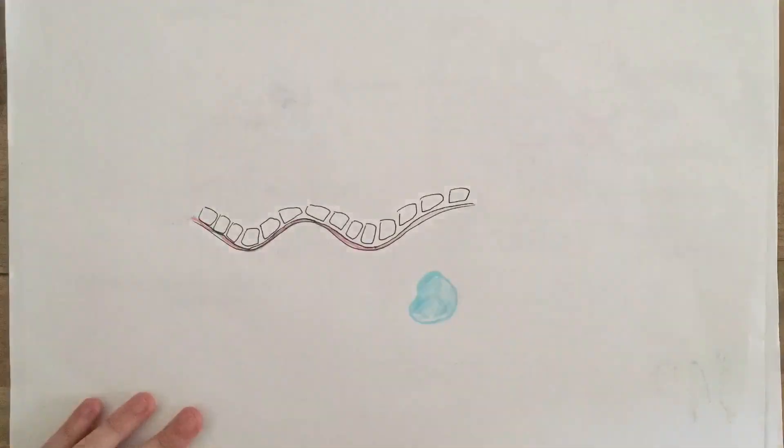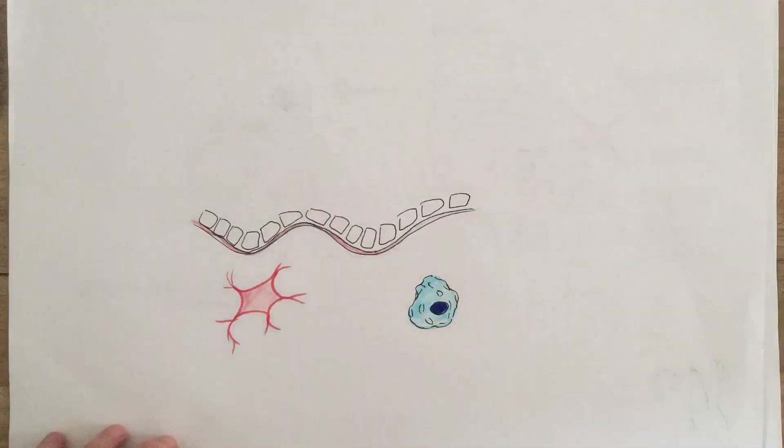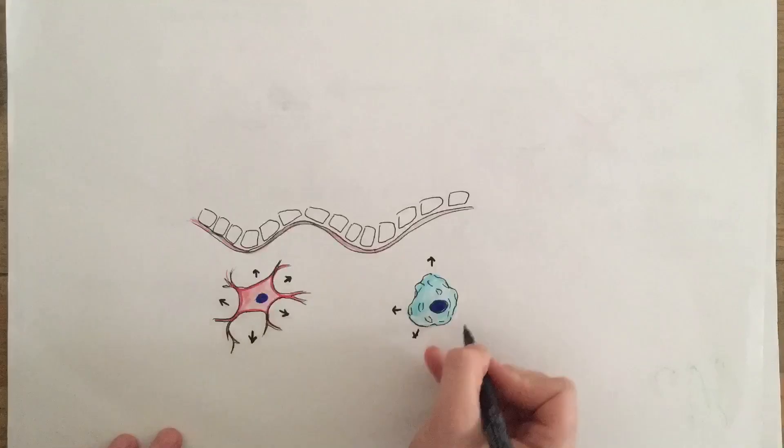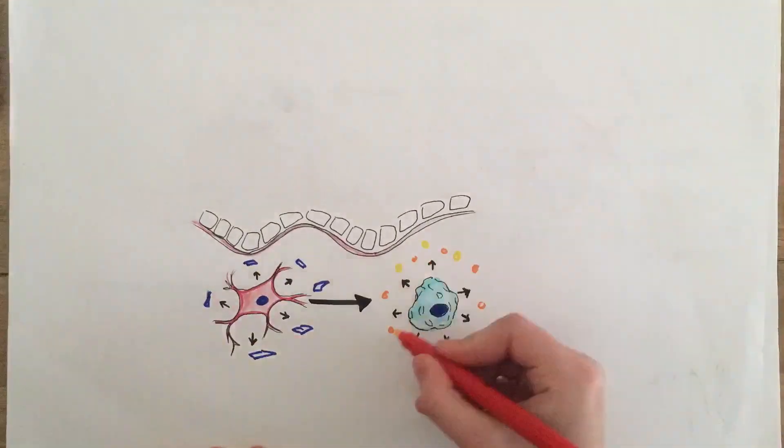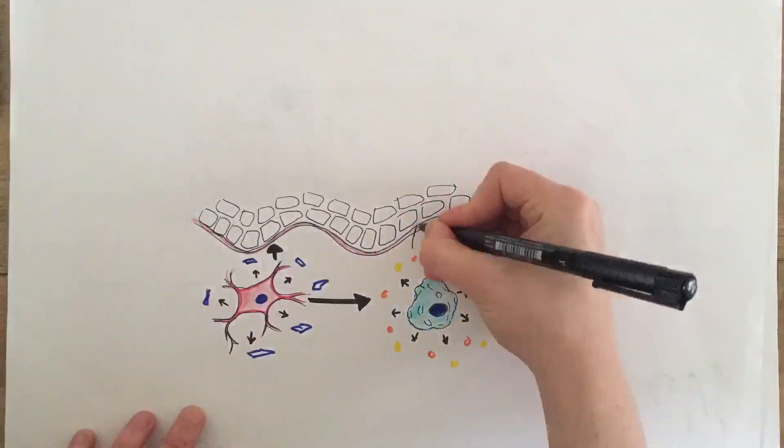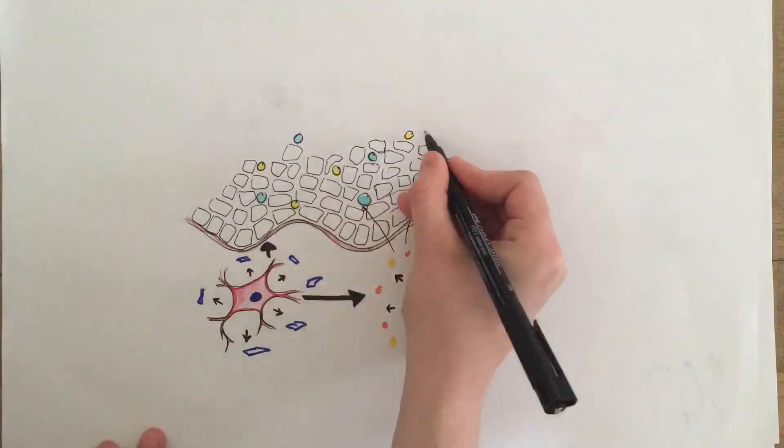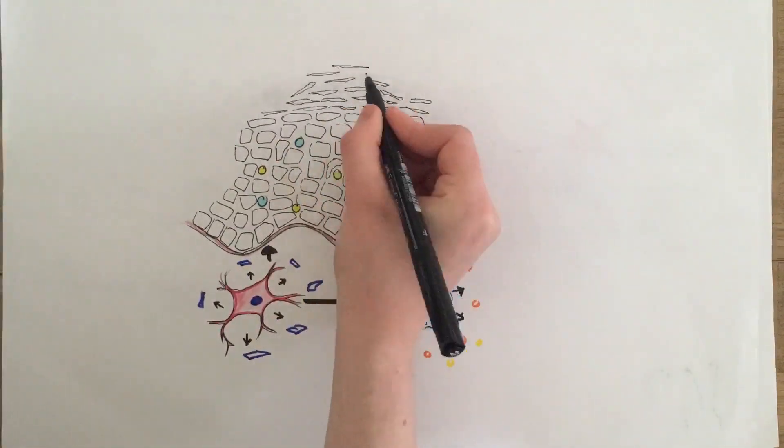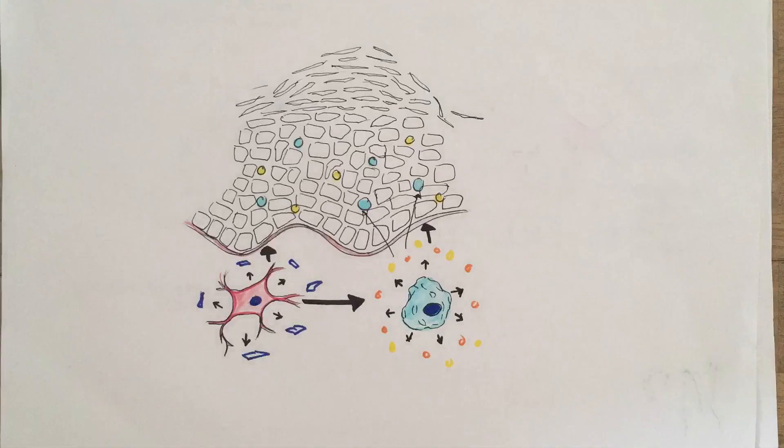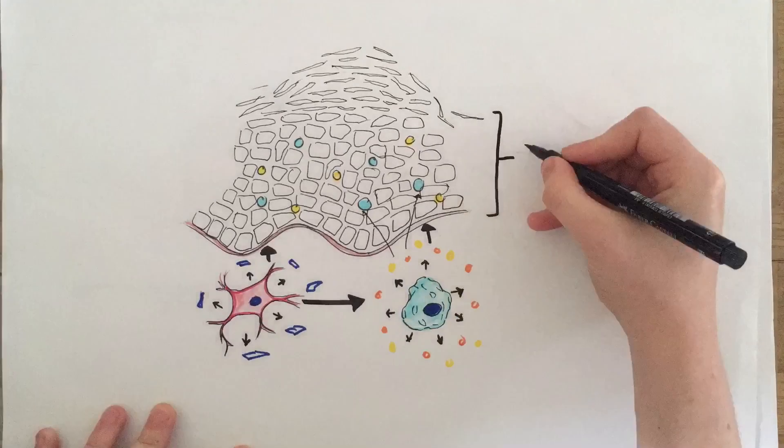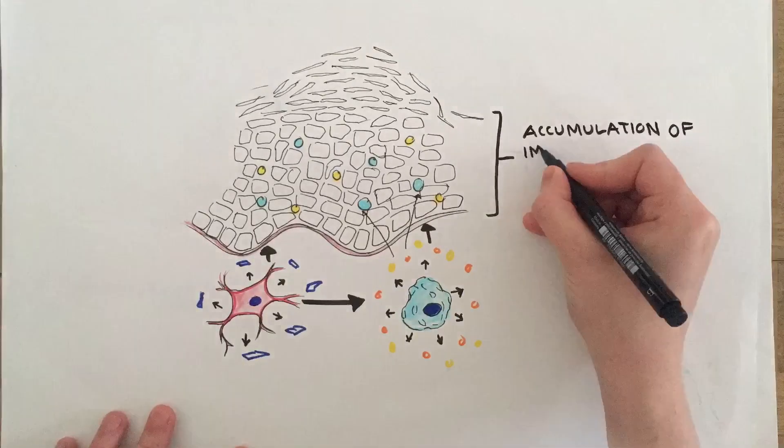In summary, the dendritic cells produce cytokines which activate T cells and other immune cells, which in turn produce their own cytokines. This causes keratinocytes to proliferate and secrete further mediators, creating a cycle of inflammation. There is an accumulation of immune cells and a thickened and inflamed epidermis.